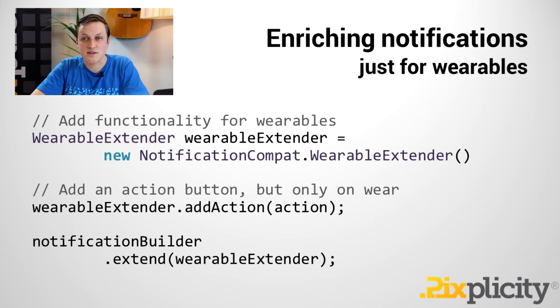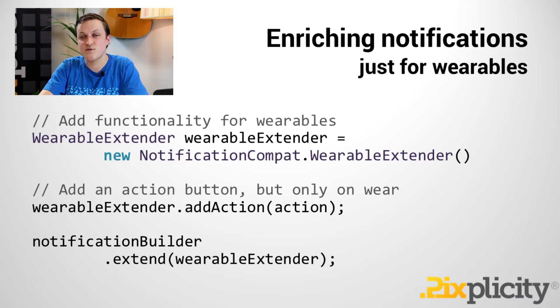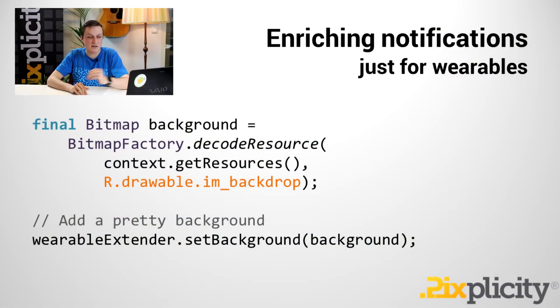In the case of Google Fit, for instance, by tapping on the history action, it doesn't invoke anything on your host device, but it instead opens straight into Android Wear to show your history on your watch. Earlier we saw that Android Wear automatically sets a background for your notification — it was that green background that was automatically extracted from the green of our icon color.